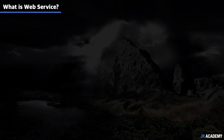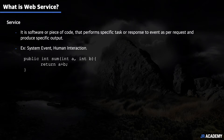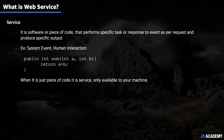The first question we have is: what is a web service? Let's understand the individual words first. A service is a software or a piece of code that performs a specific task or responds to a particular event as per request, and it produces a specific output. This task could be anything from a system event to human interaction. For example, in code we have tasks that we need to do again and again, so we usually write methods, functions, or blocks of code that take some input and produce a specific output. We can consider this piece of code as a service.